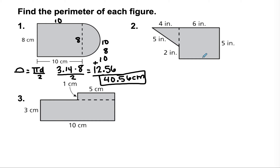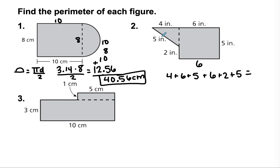For the next one, the missing side is six, because the top is six — the dotted line is on the inside so we ignore it. Writing out the addition starting at the top: four plus six plus five plus six plus two plus five equals twenty-eight inches.